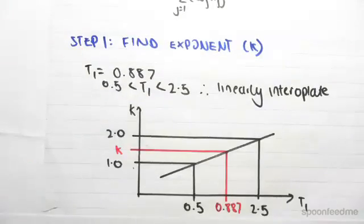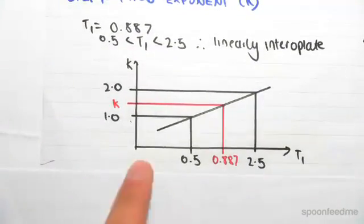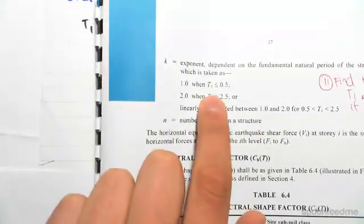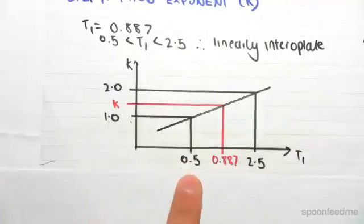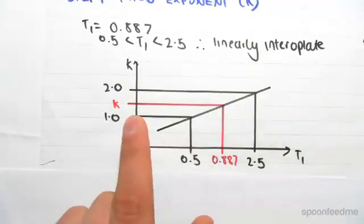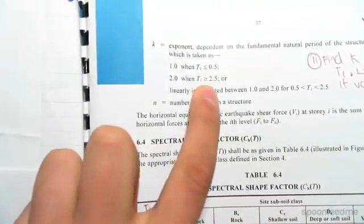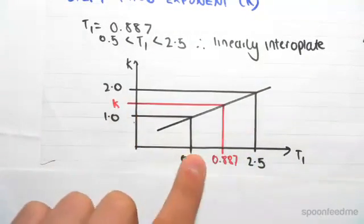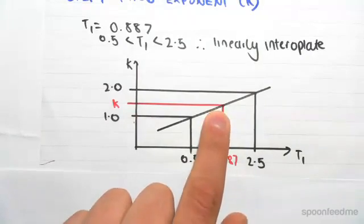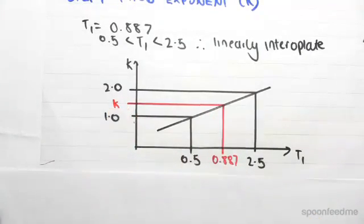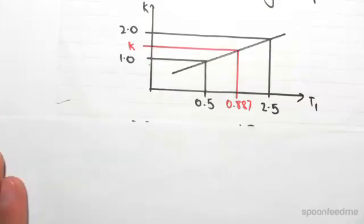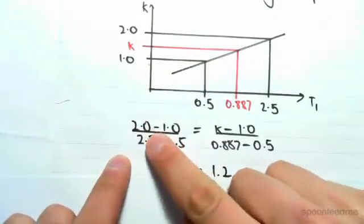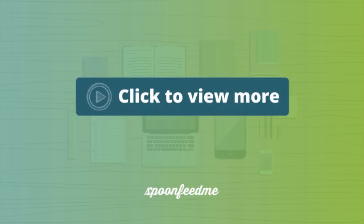So that's pretty simple. All we do, we can just draw it up. We'll go straight to the maths. But we have the value t1 equals 0.5 corresponding to 1. T1 is 2.5 corresponding to 2, k equals 2. We have a t1 value of 0.887. We want to find that corresponding k value. So all we do is we find the gradient of this line as linear interpolate. And we work together.